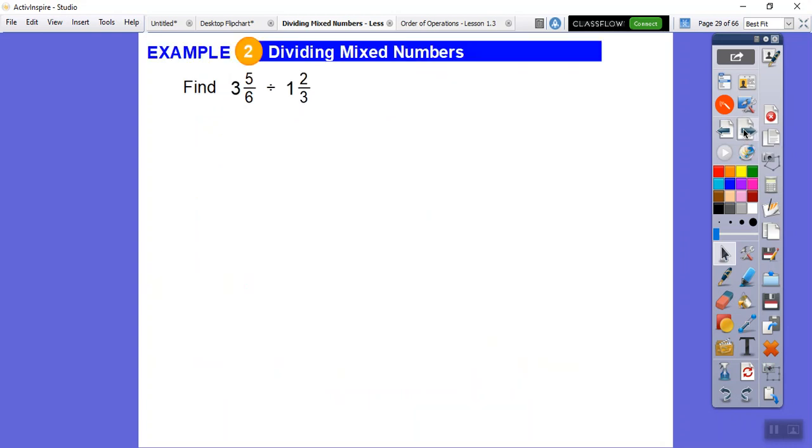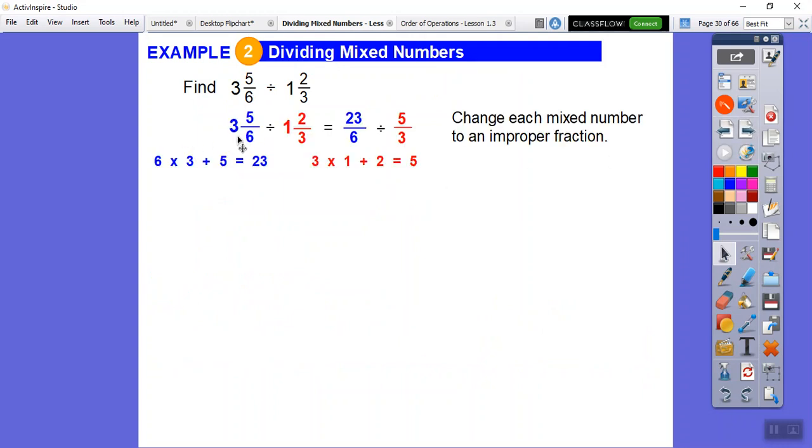Let's do that with this. We're first going to change those to improper fractions. 6 times 3 is 18, 18 plus 5 is 23. So the new top number for this guy is 23. 3 times 1 is 3, 3 plus 2 is 5. So the new top number for this fraction is going to be 5. So now we have this improper fraction divided by that improper fraction, KFC.